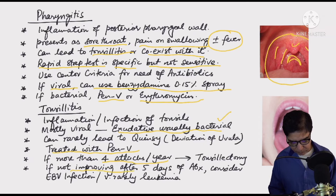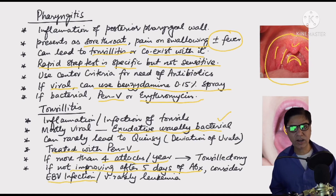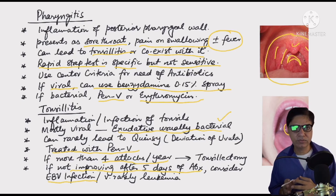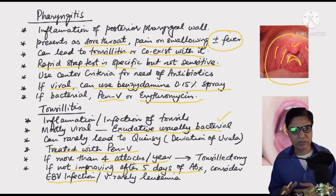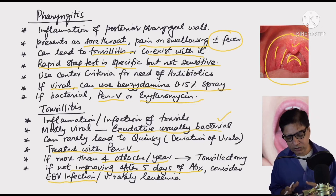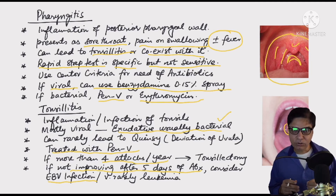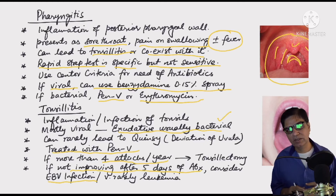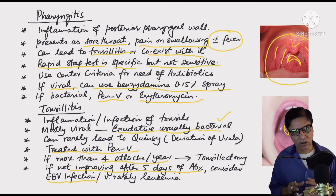If tonsillitis is not improving after five days of antibiotics, consider other conditions — particularly Epstein-Barr virus infection. If an adolescent with tonsillitis does not improve with amoxicillin or phenoxymethylpenicillin, or develops a rash or deteriorates, think of EBV. In that case, do a monospot test to rule out Epstein-Barr virus rather than changing antibiotics.